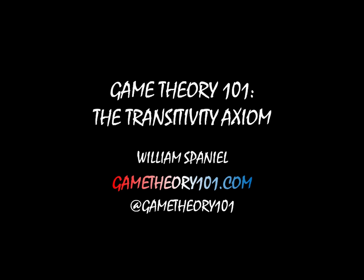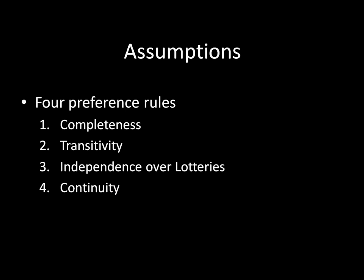Welcome back to Game Theory 101, I'm William Spaniel, and today's topic is the transitivity axiom. We are in our unit on expected utility theory, and we need to have an individual's preferences follow four rules or axioms in order to represent that individual's preferences with an expected utility function. We covered completeness last time, today is transitivity, and we'll cover the other two at a later date.